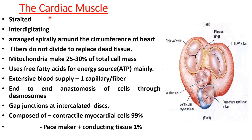The cardiac muscle is a striated muscle, like the skeletal muscle. In the skeletal muscle you saw that there were H-bands, I-bands, and A-bands in the muscle. Similarly, they are present in the cardiac muscle.